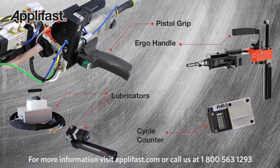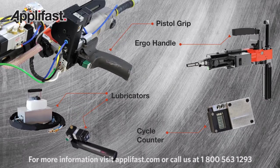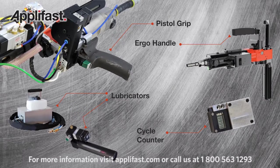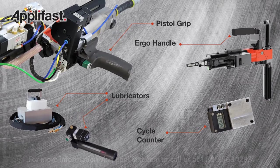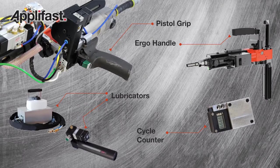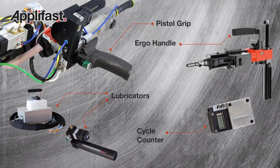Additional accessories allow for optimum ergonomics and process control such as a cycle counter to indicate the cutter needs changing or service is due. Onboard or floor pump lubricators are additional options.